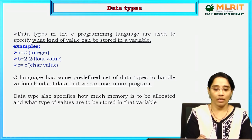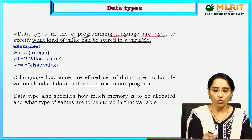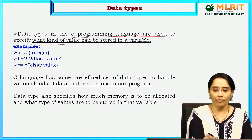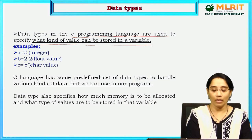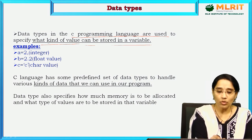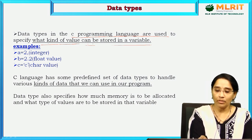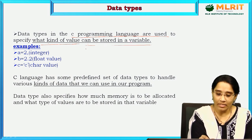Data types in C programming language are used to specify what kind of value that can be stored in a variable. It is used to specify what kind of value that can be stored in a variable.